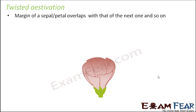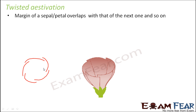The next type is twisted estivation. In twisted estivation, the margin of a sepal or a petal overlaps with that of the next one. So the margin of one overlaps with the next one, and again that overlaps with the next one, and so on. So there are regions of overlap between any two petals or sepals, and that is why it is known as twisted estivation. You can see here — this is one petal, this is the next one, and there is a portion of overlap between them.